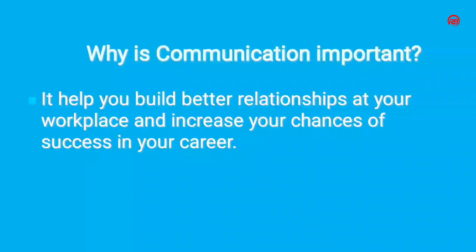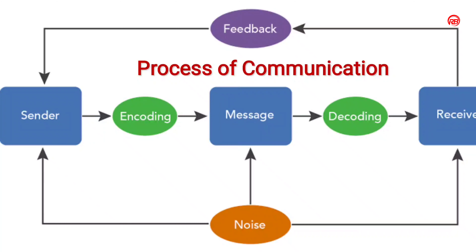So we have to build our communication skills. Here I have given you the process of communication. Basically communication is a two-way process. We need at least two people to fulfill a communication. The one is sender and the another one is receiver. The sender encodes a message and sends it to the receiver. After receiving the message, the receiver decodes the message and gives his feedback to the sender. While replying the message, the receiver will become the sender and the sender will become the receiver. It is a cyclic process.